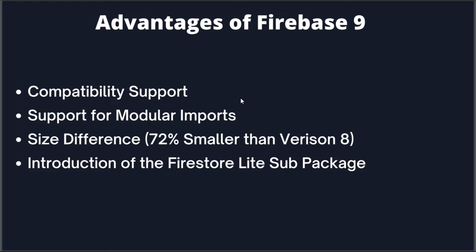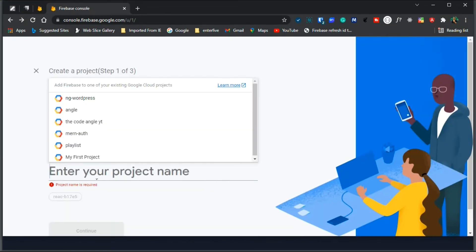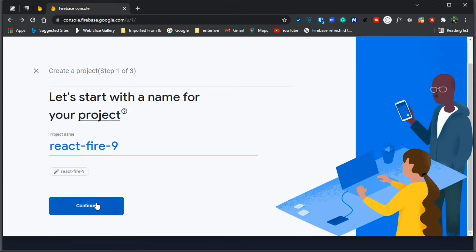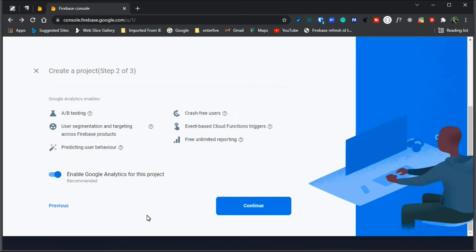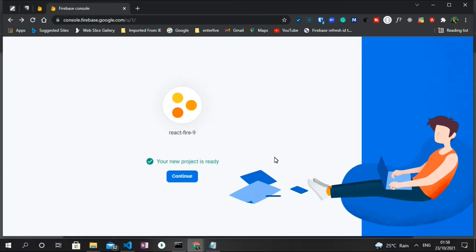The Firestore Lite sub-package allows you to create CRUD functionalities in a much lighter, faster, and simpler way. The next step is to create a new project in the Firebase dashboard. I'll click on 'Add Project', name it 'react-fire-9', click Continue, disable Google Analytics since this is a small project, click 'Create Project', and then continue to the dashboard.